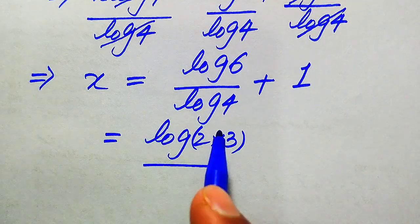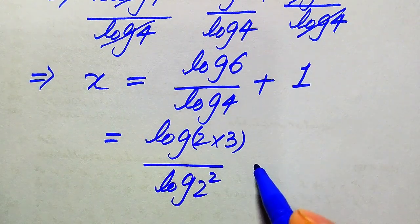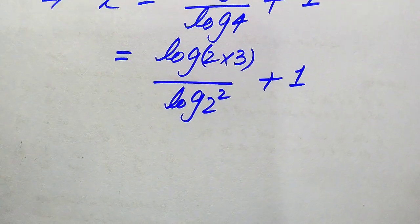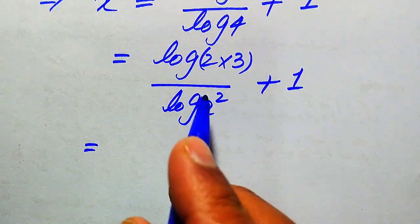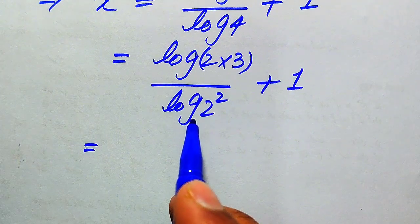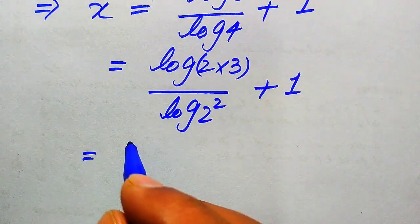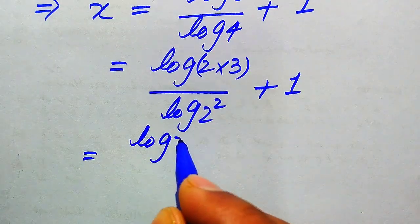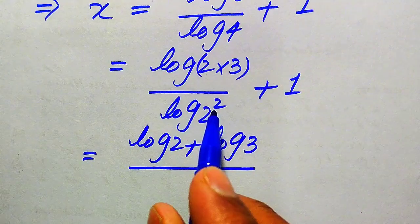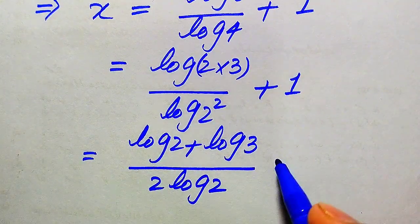We break 6 as log of 2 multiplied by 3, and we write log of 4 as log of 2 squared, plus 1. We again use the two properties of log: the first property in the numerator and the second in the denominator. It becomes log 2 plus log 3, divided by 2 times log 2, plus 1.